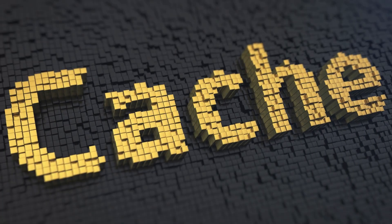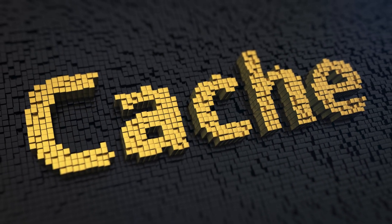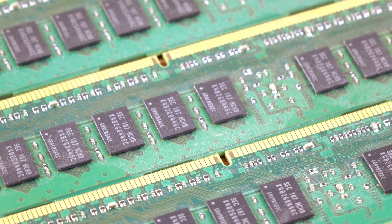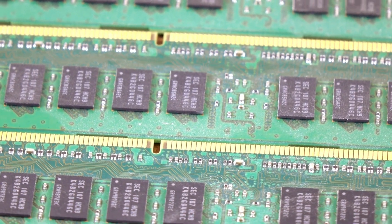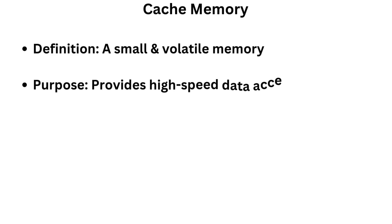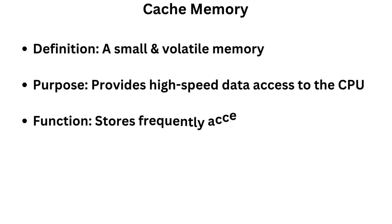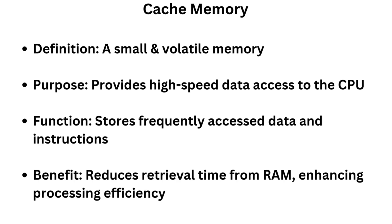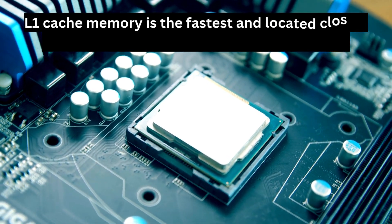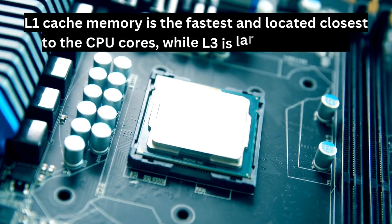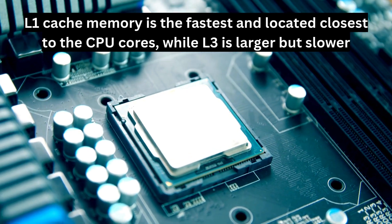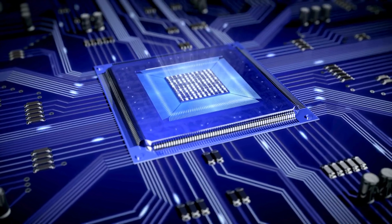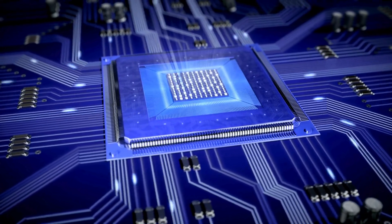Next, we have cache memory. Cache is a small-sized type of volatile memory that provides high-speed data access to the CPU. It stores frequently accessed data and instructions to reduce the time it takes for the processor to retrieve information from RAM. There are multiple levels of cache — L1, L2, and L3 — each with different speeds and capacities. L1 is the fastest and located closest to the CPU cores, while L3 is larger but slower. The use of cache memory can significantly boost performance, allowing modern CPUs to operate at speeds exceeding several gigahertz.